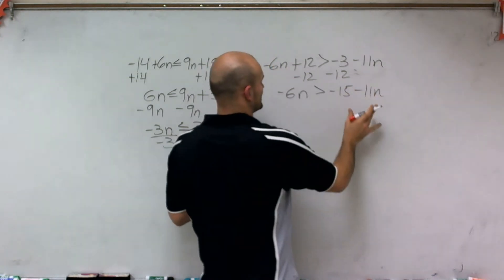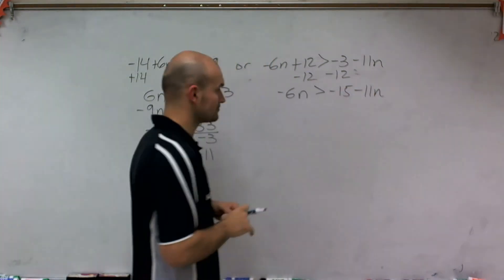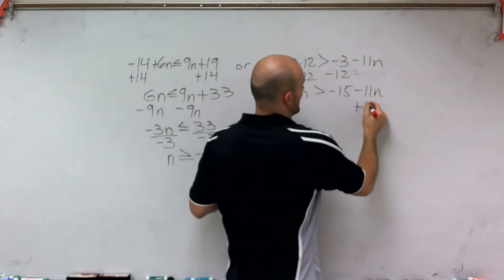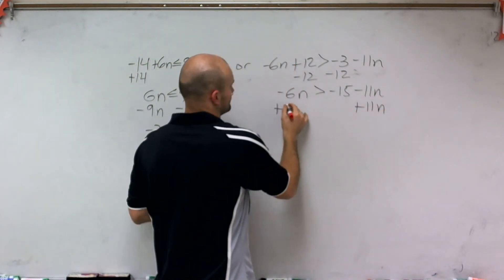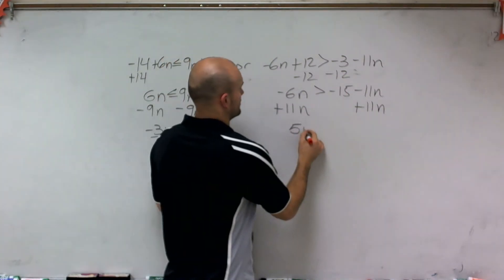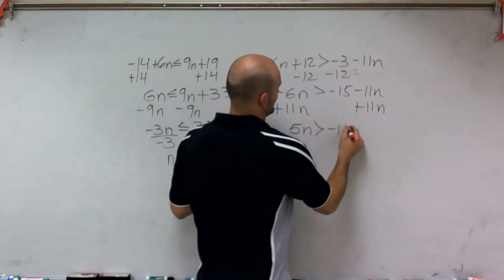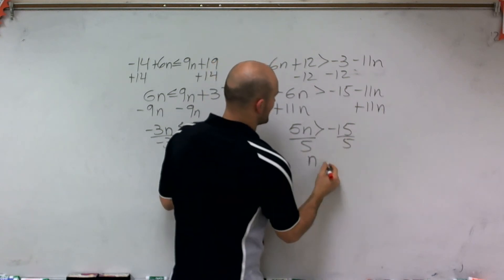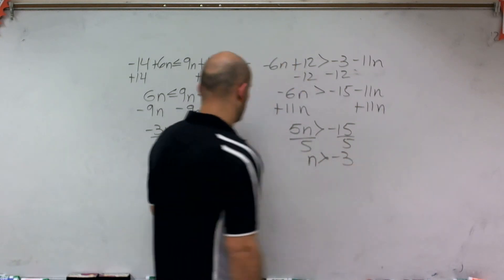Then I'll get the n's back on the same side. So now I'll add 11n, and therefore I'm left with 5n is now greater than negative 15 divided by 5, and I have n is now greater than negative 3.